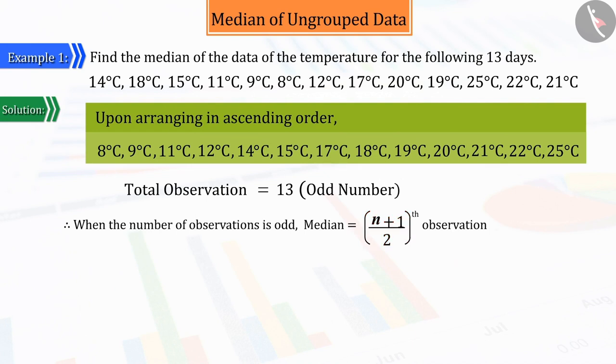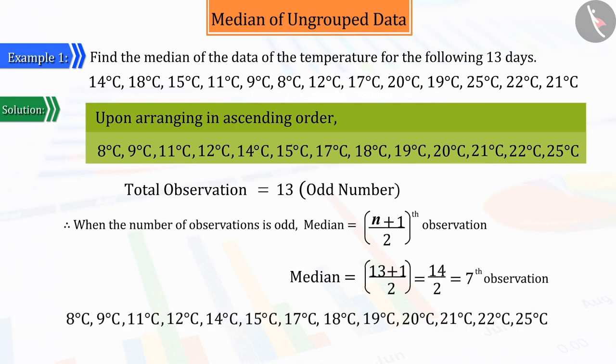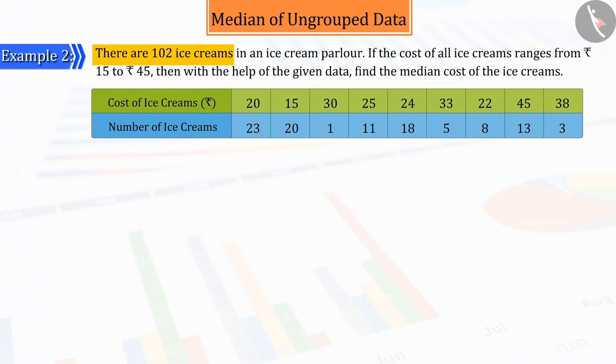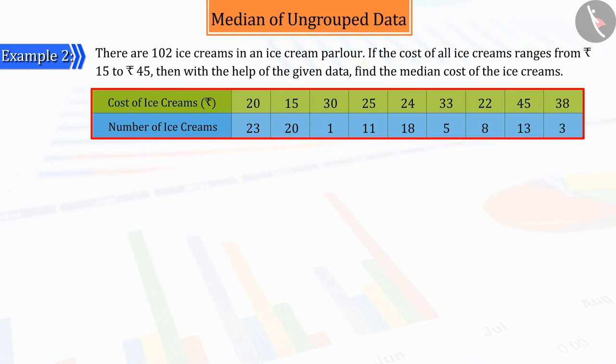Let us now discuss this in detail. There are 102 ice creams in an ice cream parlor. If the price of ice creams ranges from 15 rupees to 45 rupees, then with the help of the given data, find the median cost of the ice creams.